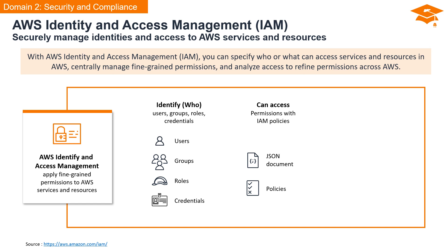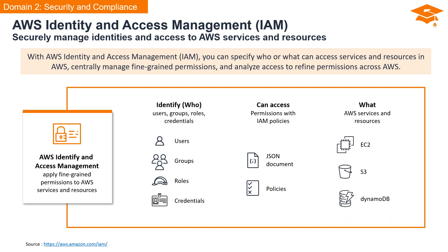Access permissions are defined and controlled through IAM policies. These policies determine what actions users or identities can perform on AWS services and resources. IAM grants access to a wide array of AWS services and resources, such as EC2, S3, and DynamoDB. It acts as the gateway that regulates access, ensuring that the right individuals or entities have the permissions they need.